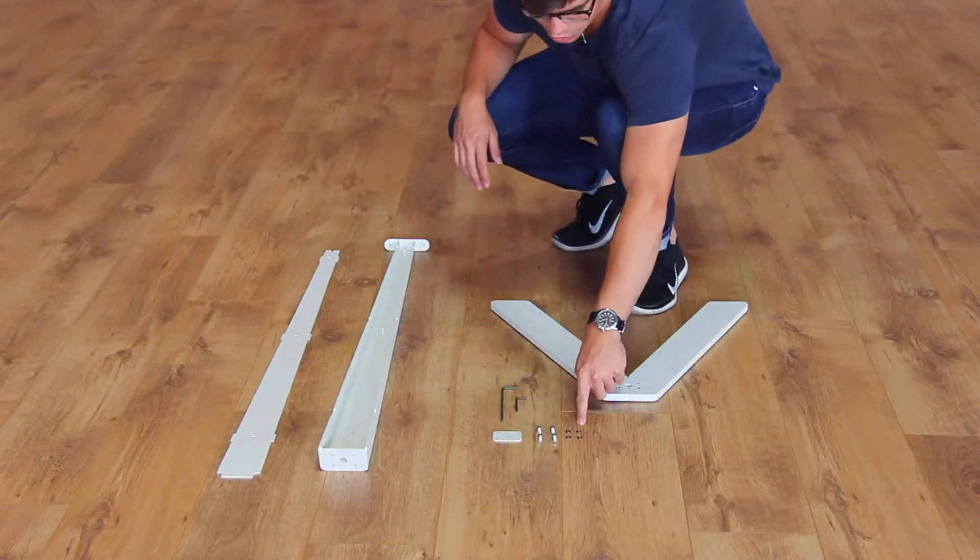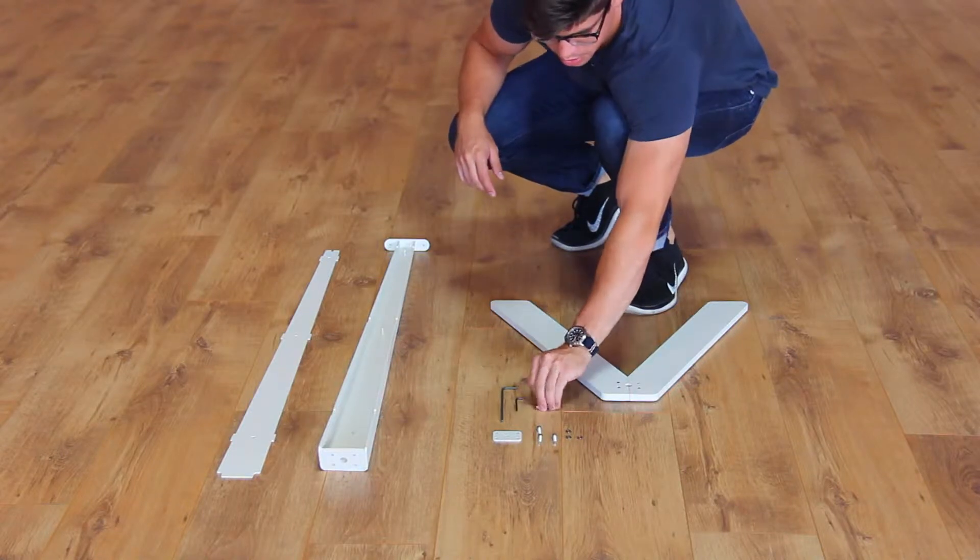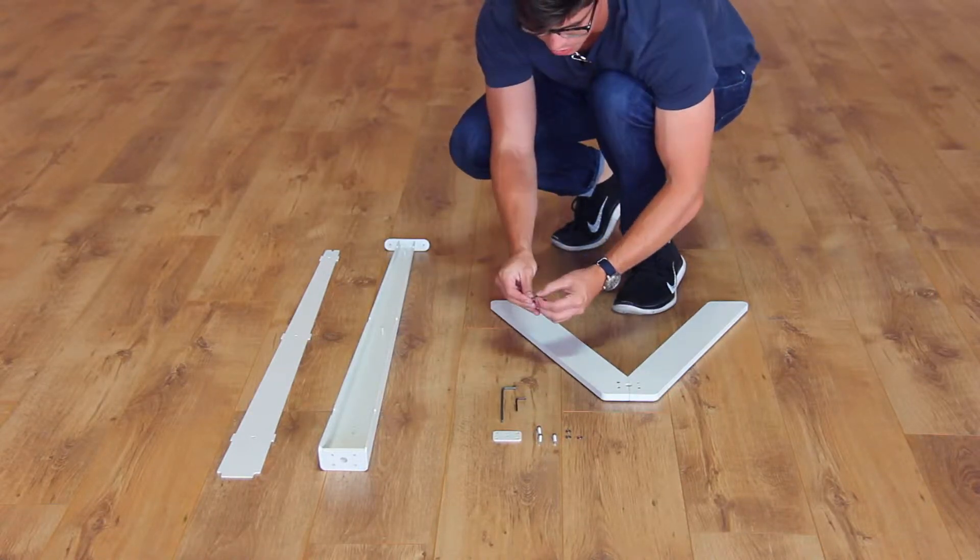First thing we're going to do is take our lock washers and our screws and we're going to give each of the screws a washer.